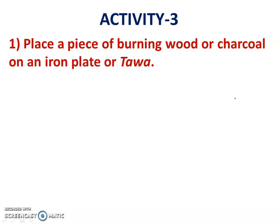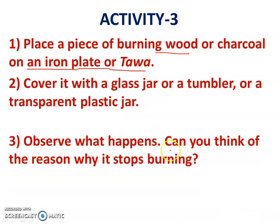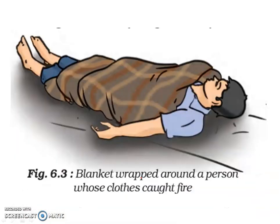Activity number three: place a piece of burning wood or charcoal on an iron plate. Now cover it with a glass jar, tumbler, or transparent plastic jar. Observe what happens — can you think of the reason why it stops burning? Since the oxygen is cut out, it is not receiving any oxygen. Similarly, a blanket is wrapped around a person whose clothes catch fire, cutting down the oxygen supply.